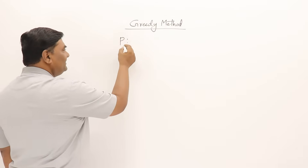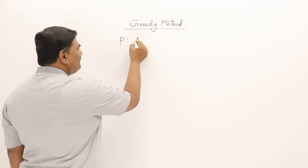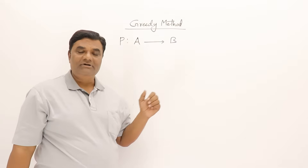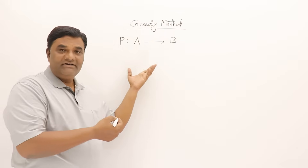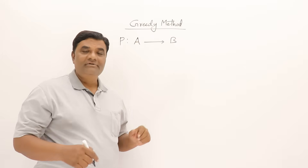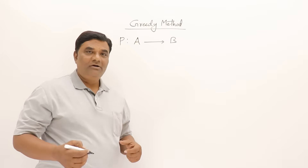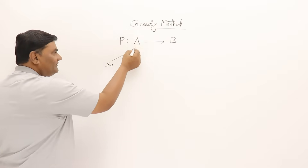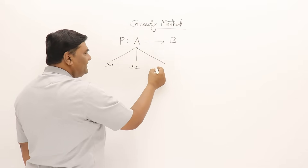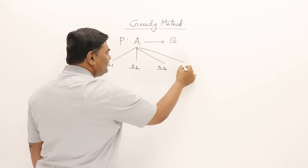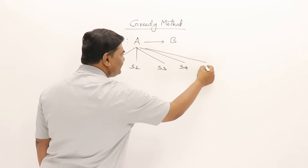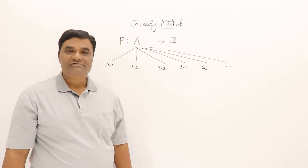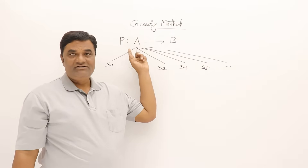Suppose there is a problem P, and that problem is: I want to travel from location A to location B. I have to cover this journey — that is my problem. For this problem there may be more than one solution. I can travel by walk (solution one), by bike (solution two), by car (solution three), by train (solution four), or by flight (solution five).